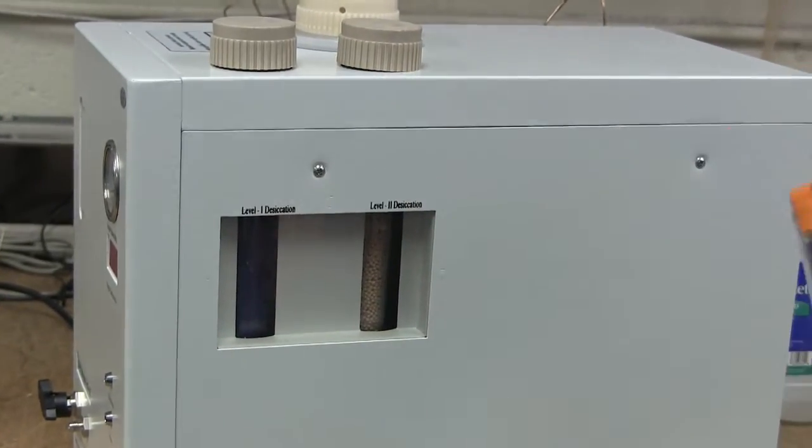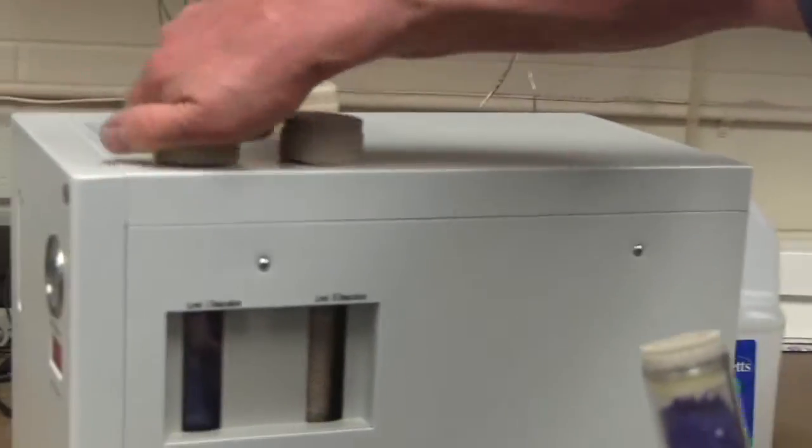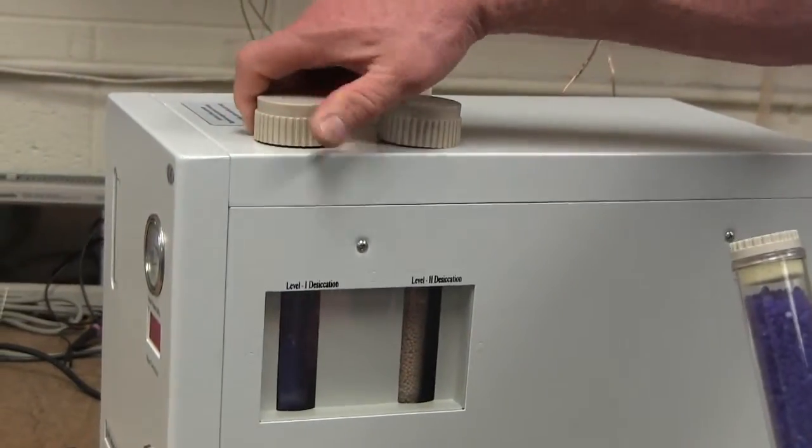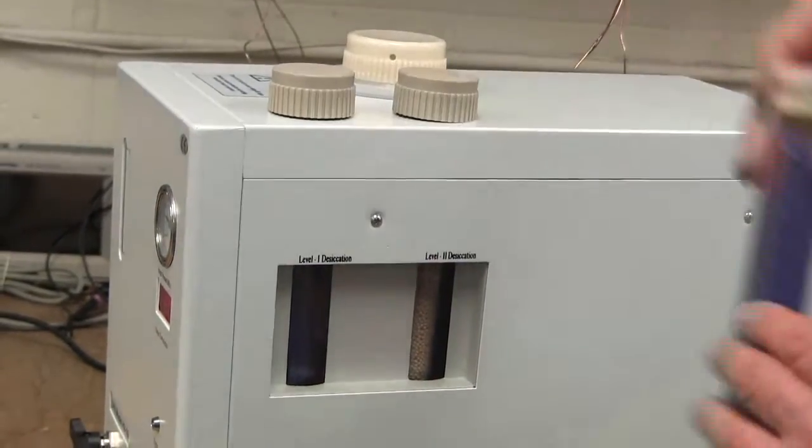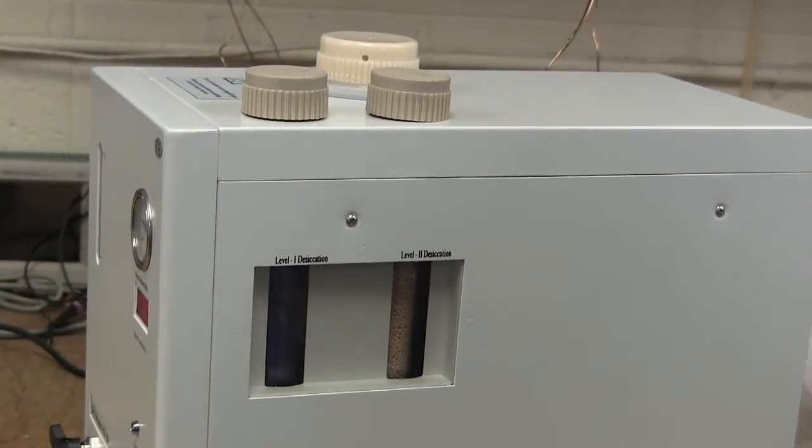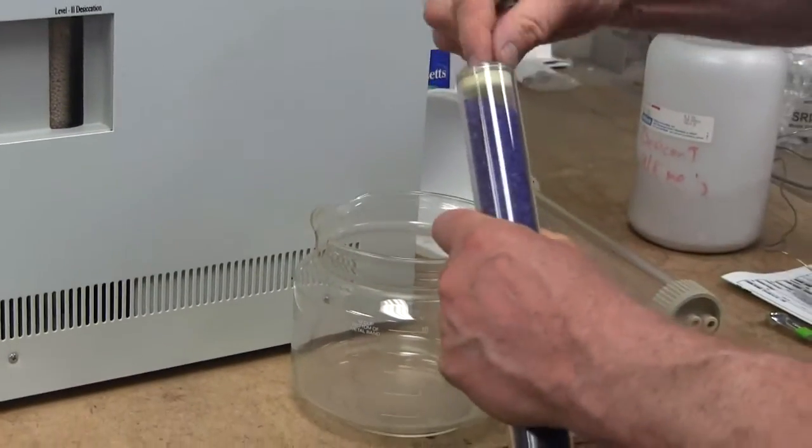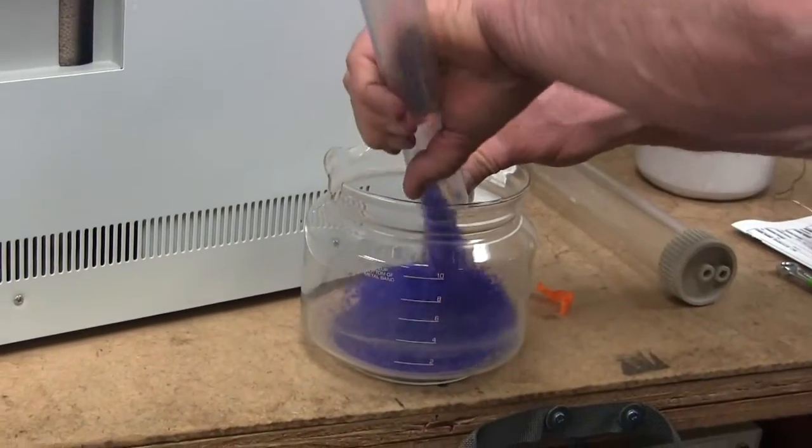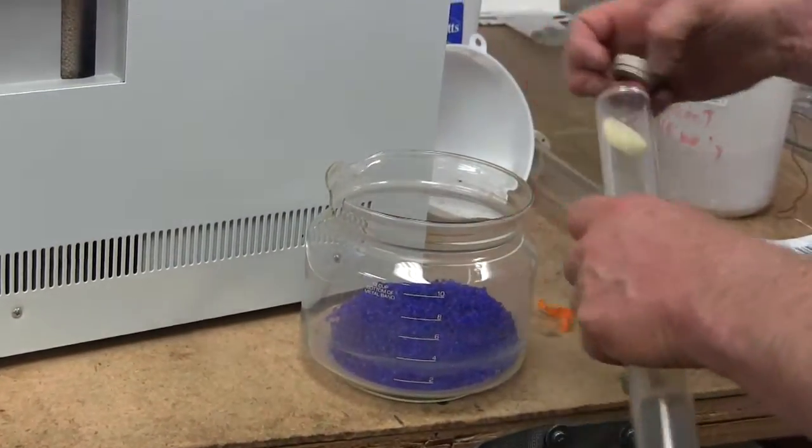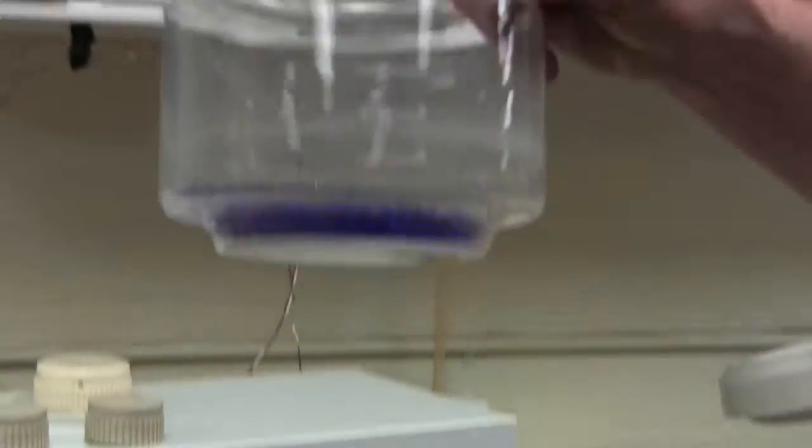So the way you regenerate the silica gel is you remove the silica gel from the hydrogen generator by unscrewing this cap here, and then this tube pulls right out. So find a coffee cup or some kind of glass container, and unscrew the top of the silica gel, and pour the silica gel into the glass container, and then take it over to the microwave and microwave that for five minutes.